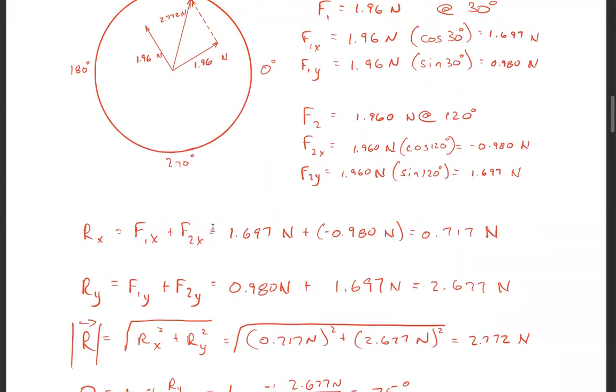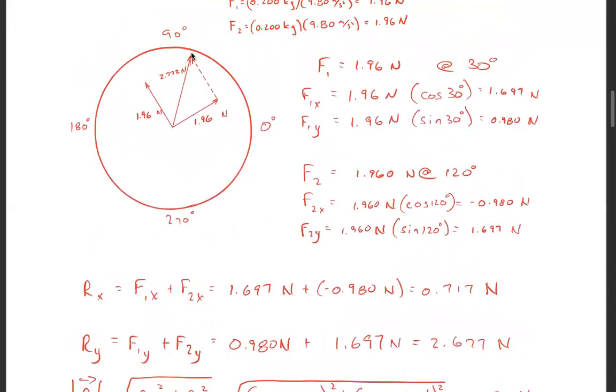Now to get the resultant you have to add the components. So the Rx components, F1x plus F2x is 1.697 Newtons plus minus 0.98 Newtons, and you get 0.717 Newtons.